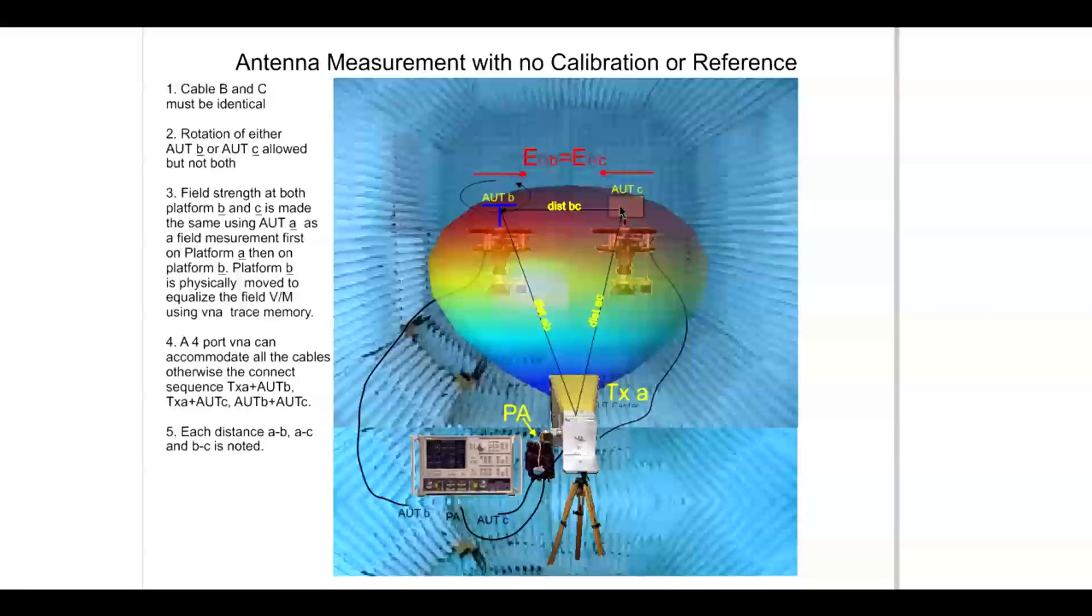AUT C and AUT B will be pointed at one another. Independently, each of them will also need to be pointed at the horn to make these measurements. Clearly, we are operating off the bore sight and on the side of the main beam, so we need to make sure that the volts per meter field strength of AUT B and AUT C are identical.